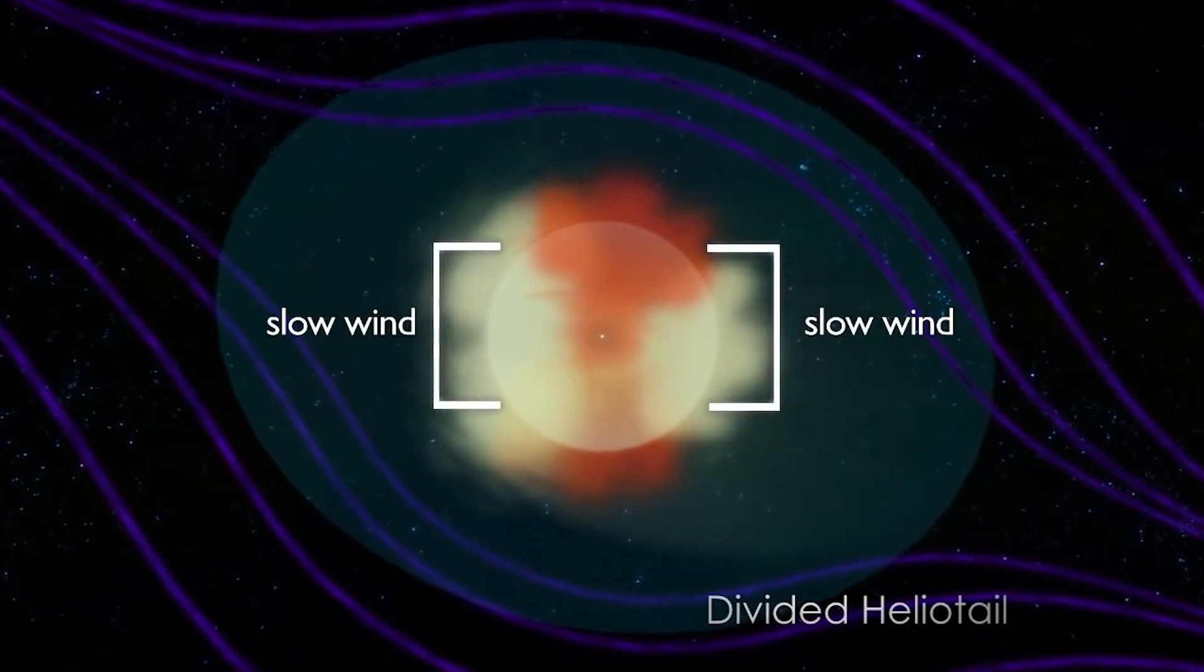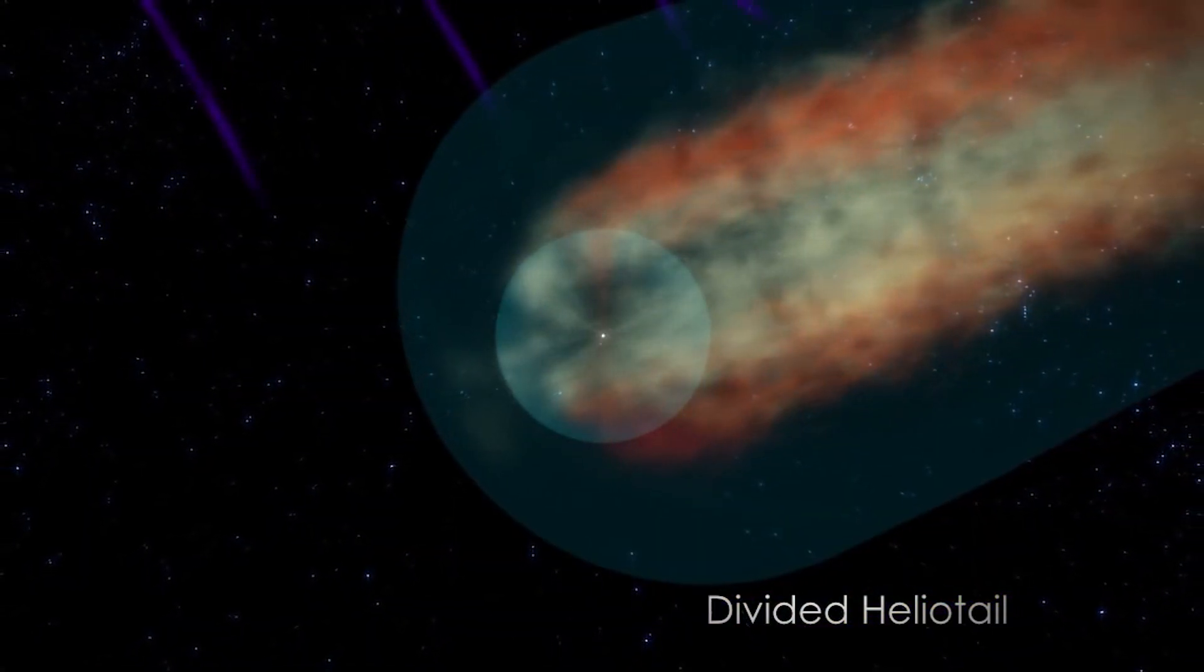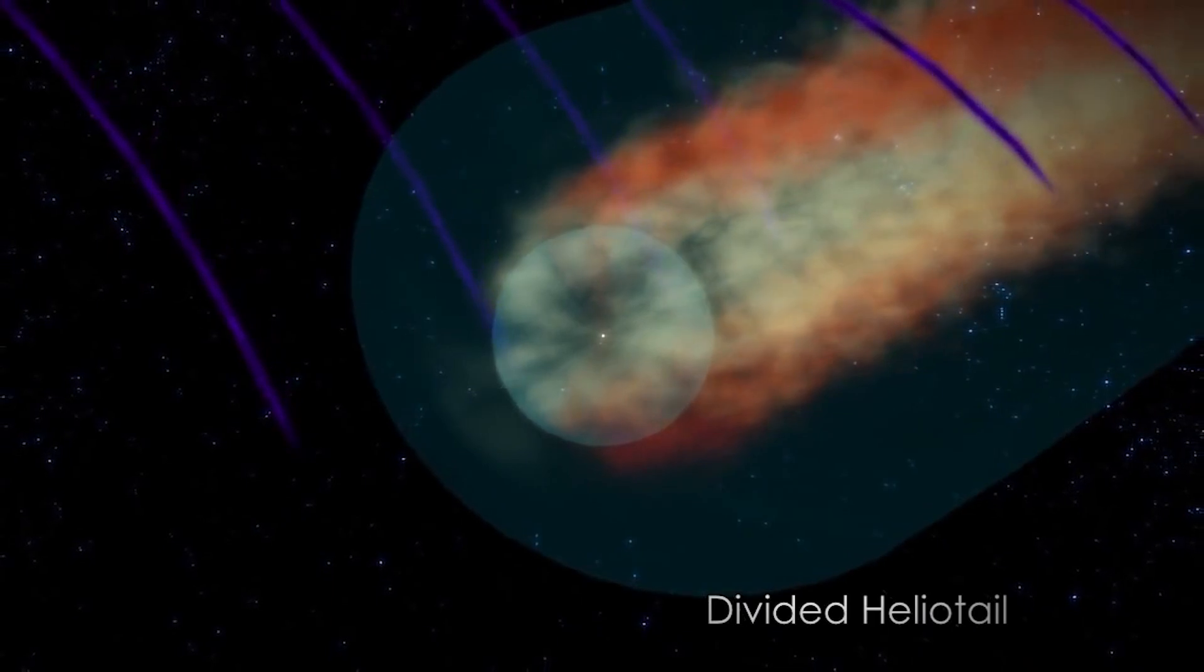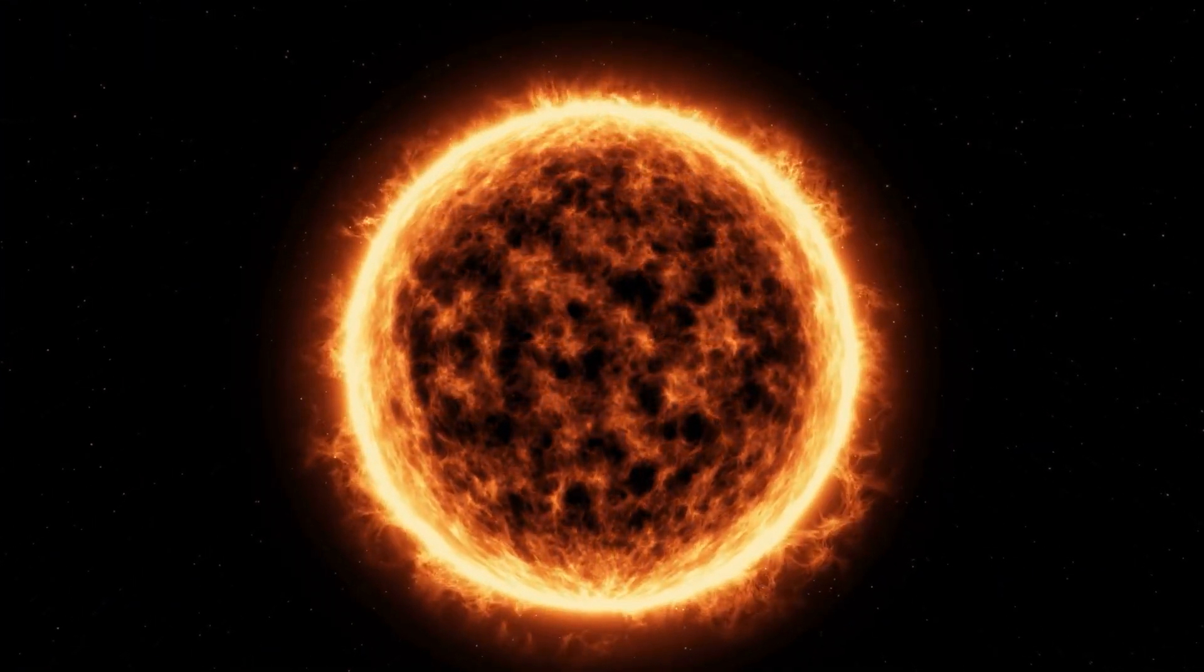The heliopause is the boundary where the solar wind from our sun slows down and merges with the interstellar medium, marking the edge of our solar system where the influence of the sun or any other star is significantly diminished.